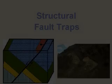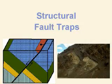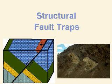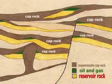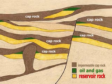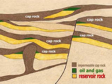In structural fault traps, the formation of the rock has changed. You can see where the original reservoir rock was, but the earthquake tilted the formation, creating a trap. Later, oil and gas migrated into this space and was trapped there.